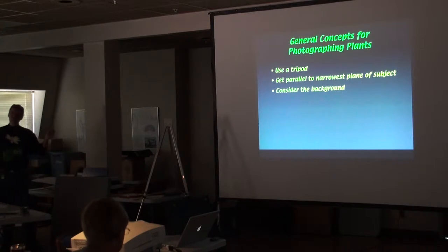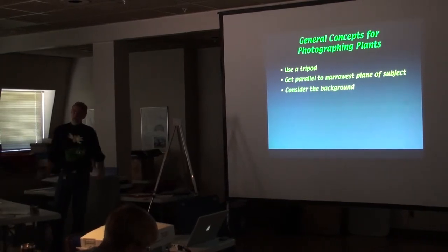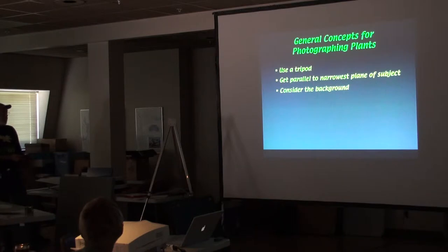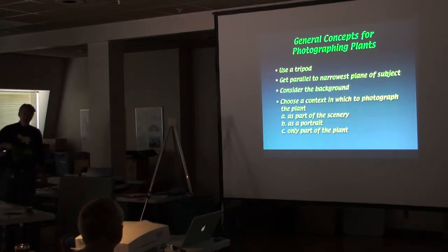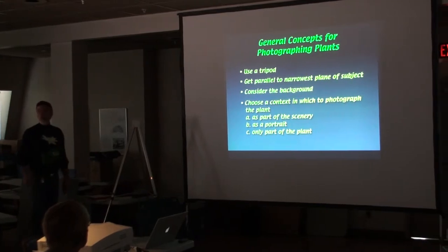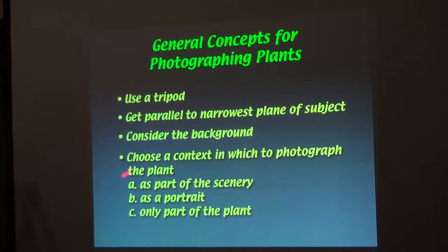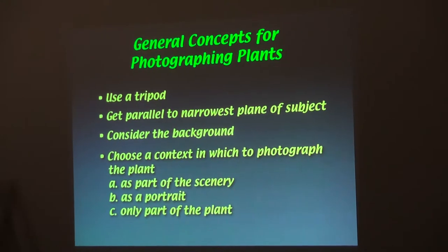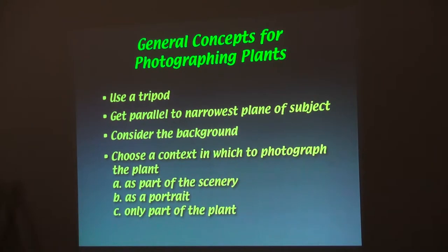You must consider the background. How do you consider the background? If you don't want it in the picture, get it out of the picture — optically, by manipulating the field. And choose a context — that's this level thing we're talking about. How am I going to photograph this plant? Is it part of the scenery? Yesterday when I was down in the ditch, I didn't want to show where the plant grows — I wanted to show the plant — because it's in a ditch with a railroad and road. But if you're out in Yellowstone with an orchid and you want to show the scenery with the bison, you can do that.